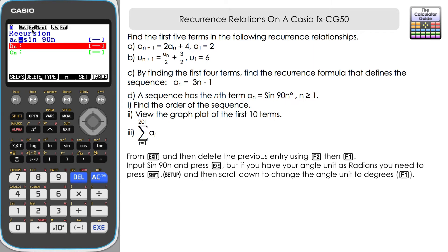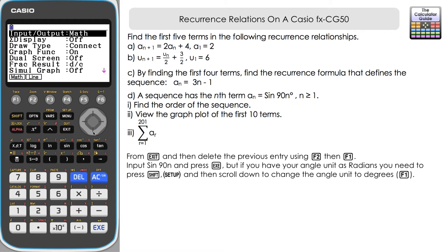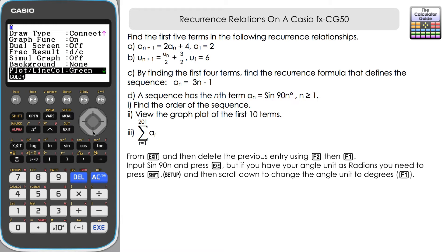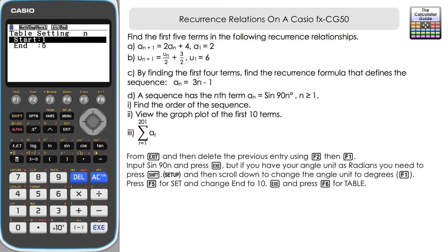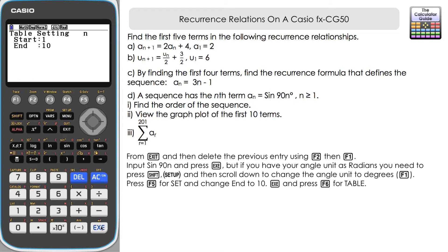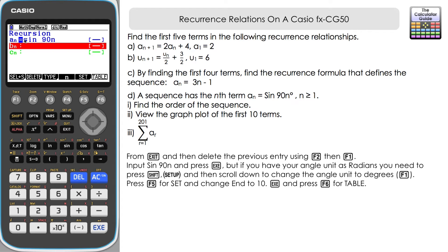One important note: by default the calculator is in radians, but n in the question is in degrees. Press Execute to store the formula, then go to Shift and Setup, scroll down to Angle, and press F1 for Degrees. The angle unit is now set to degrees, shown at the top left. Check settings with F5 — change the end value to 10 so we generate 10 terms. Press Execute.